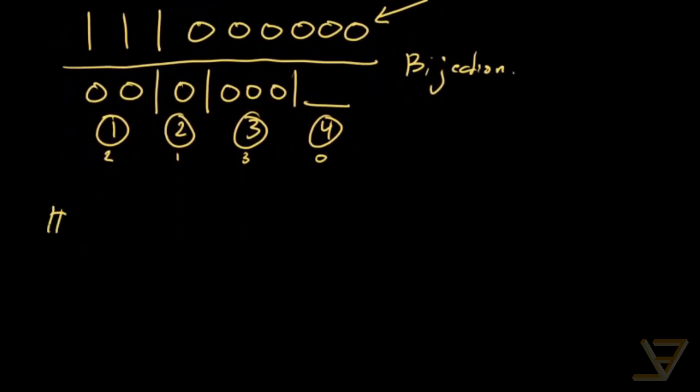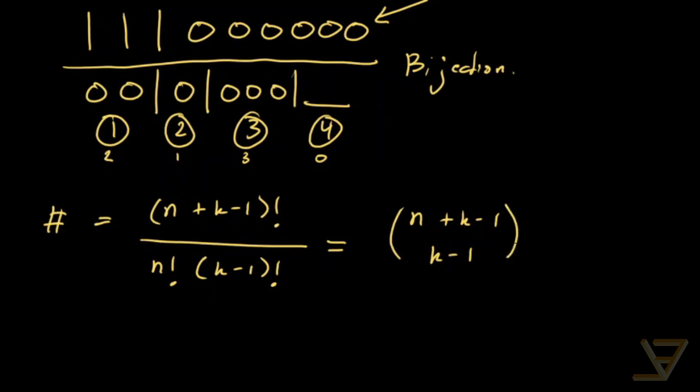What we get is that the number equals N balls plus K minus 1 factorial, divided by N factorial times K minus 1 factorial. Because the sticks are indistinguishable even though the sections are distinguishable in order, and the balls are indistinguishable. We're using a multinomial permutation here. And this is simply equal to N plus K minus 1, choose K minus 1. And that is the answer.